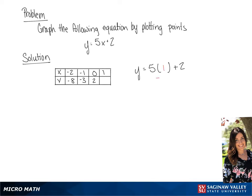And last, we're going to substitute x for 1, and we get 5 plus 2, which equals 7. So we have 4 points.